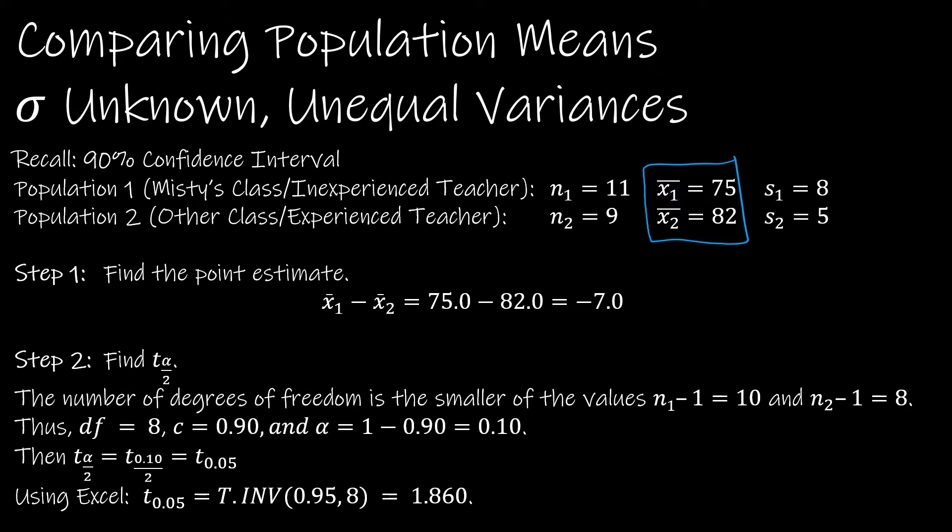Step two, we have to find our critical value. For a T model, which is what happens when sigma is unknown, we have to find the degrees of freedom. Particularly when we have unequal variances, the number of degrees of freedom is the smaller of n1 minus 1 and n2 minus 1. So that's 11 minus 1, which is 10, and 9 minus 1, which is 8, and the smaller of those is 8. So I'm going to use 8 degrees of freedom.